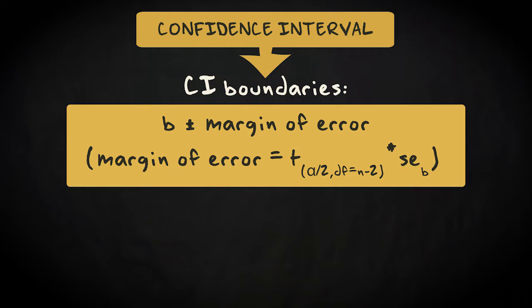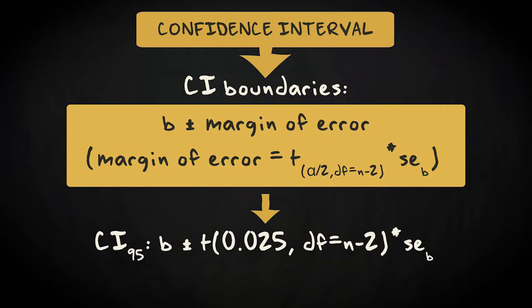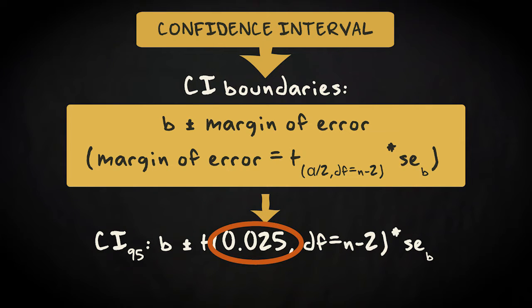The boundaries of the confidence interval are calculated by taking the sample value of regression coefficient B and subtracting and adding the margin of error. The margin of error for a 95% confidence interval is the t-value associated with n minus 2 degrees of freedom and a p-value of 0.025. Together with the two probabilities of 0.025 in the left and right tail, the 95% confidence level adds up to 100.